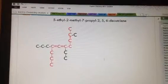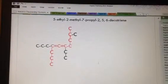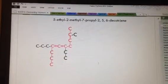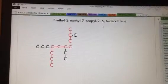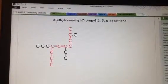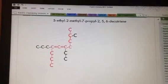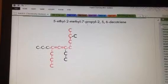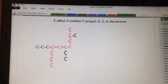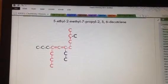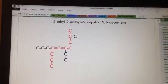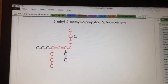This is a 5-ethyl, 2-methyl, 7-propyl, 2-5-6-decatriene. These charms are listed here in alphabetical order. E before M before P. You'll notice the number has no bearing on the order. The 5-ethyl is coming before the 2-methyl, and that comes before the 7-propyl.